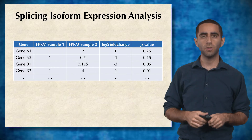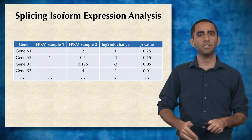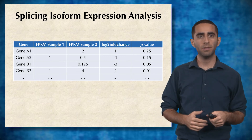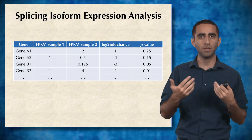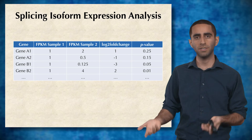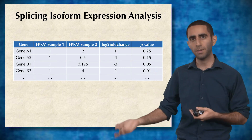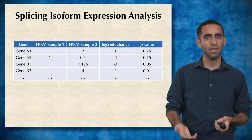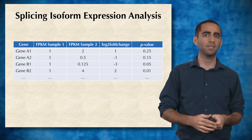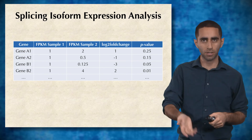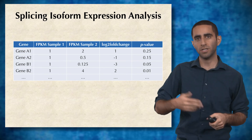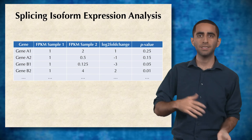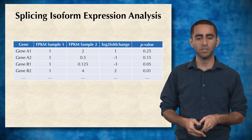The problem ends up being effectively the same. If we can detect these isoforms, we can count the number of instances of each isoform, normalize the same way that we did before to get FPKM, and then perform the same statistical tests to get a log two-fold change as well as a p-value to determine whether this isoform is significantly differentially expressed or not.